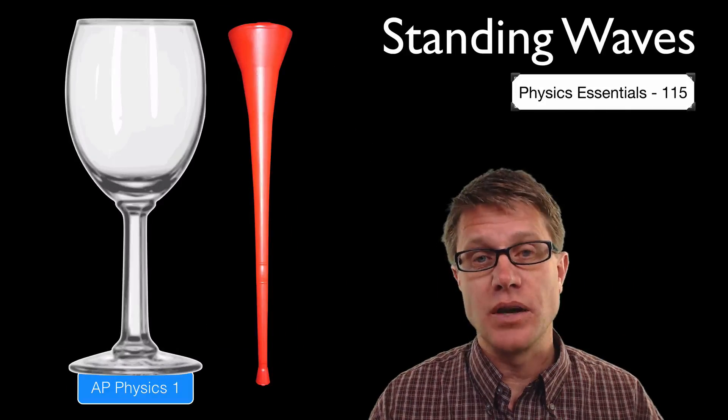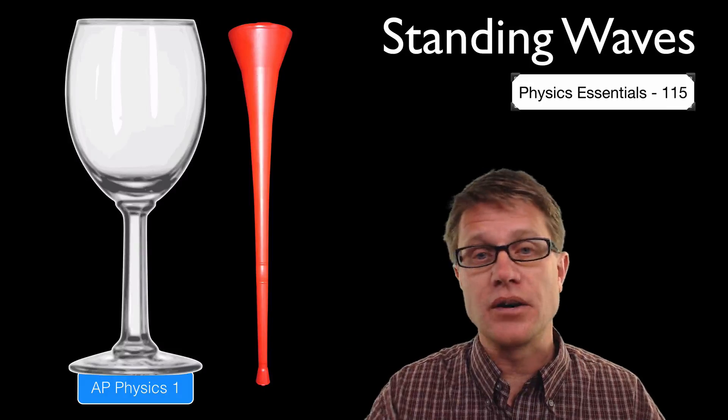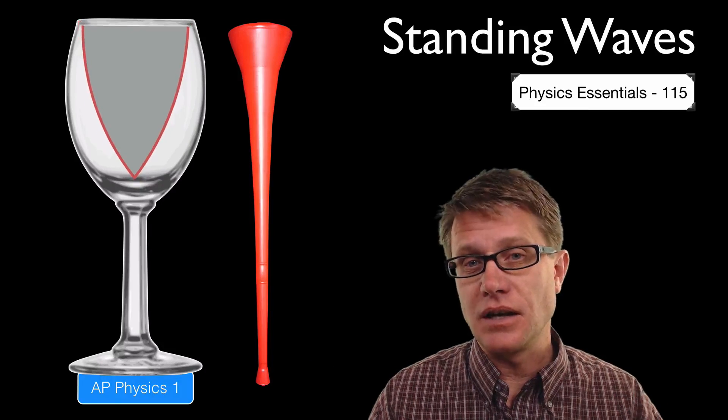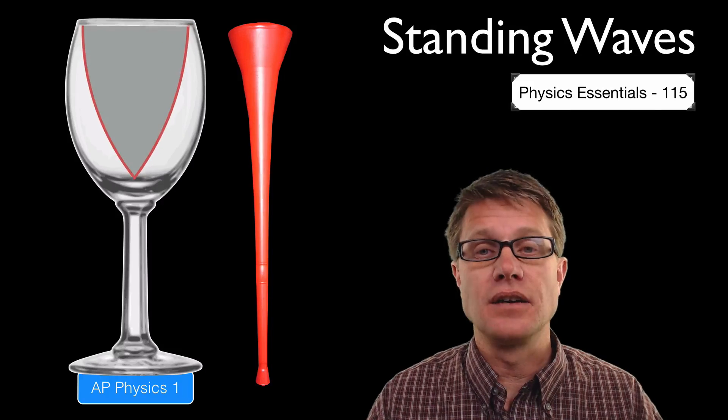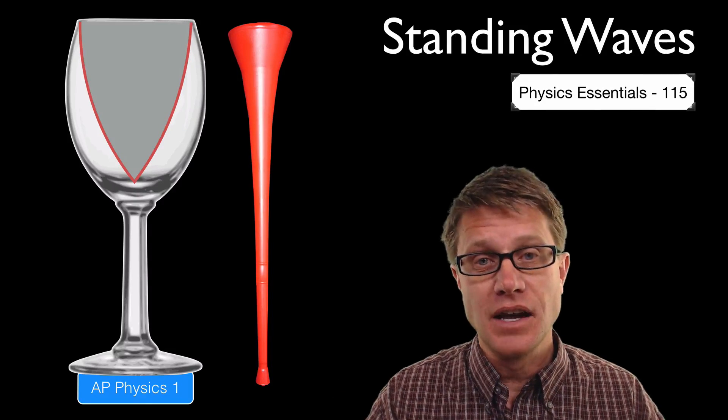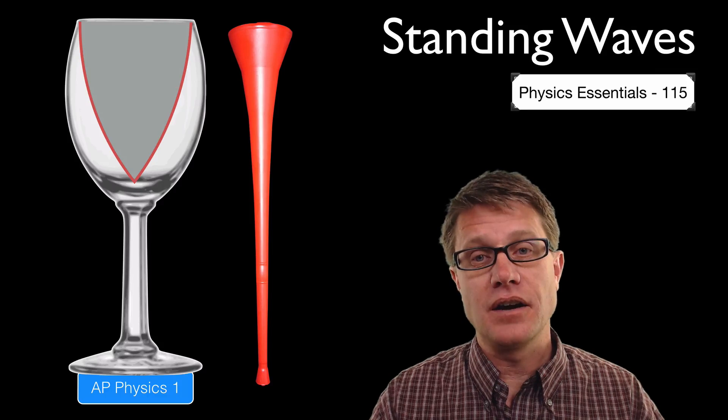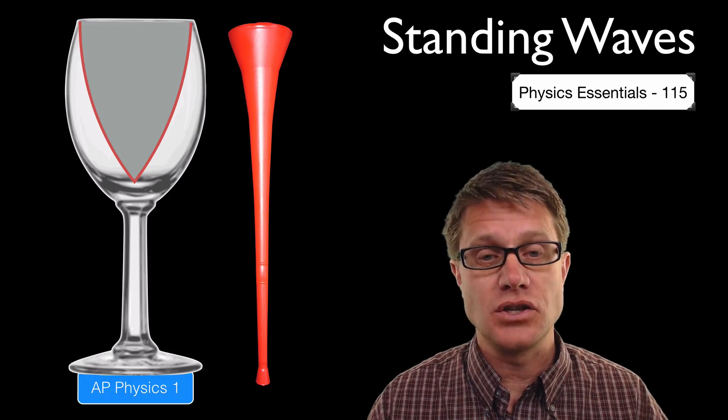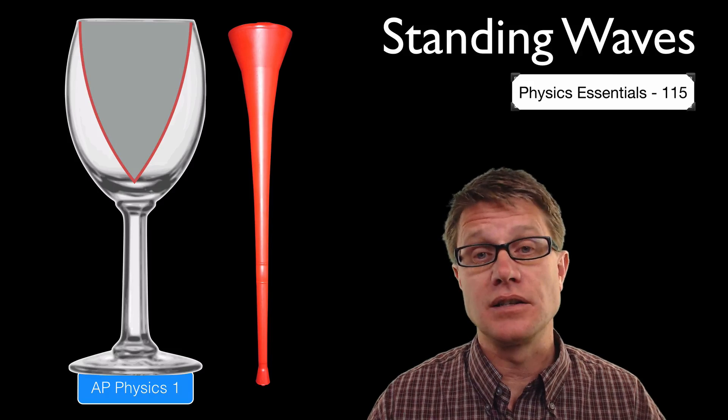Now a wine glass works the same way. If you rub your finger with a little bit of water around the surface of it, what you can do is generate these standing waves inside the wine glass. What you are doing is vibrating the sides. And as you do that you are vibrating the air. And since you have a standing wave inside there it makes this pitch. Add water to it and you are going to have a slightly different pitch.